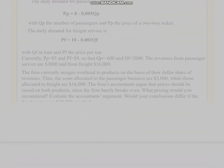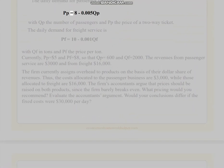The daily demand for passenger service is PP = 8 - 0.005 QP, with QP the number of passengers and PP the price of a two-way ticket. The daily demand for freight service is PF = 10 - 0.001 QF, with QF in tons and PF the price per ton. Currently, PP equals $0.05 and PF equals $0.08, so that QP equals 600 and QF equals 2,000. The revenues from passenger service are $3,000 and from freight $16,000. The firm currently assigns overhead to products on the basis of their dollar share of revenues. Thus, the costs allocated to the passenger business are $3,000, while those allocated to freight are $16,000.